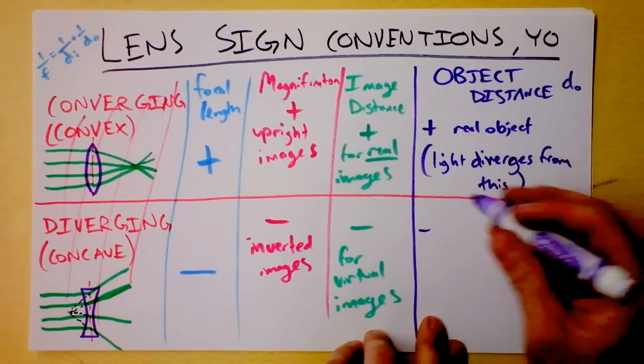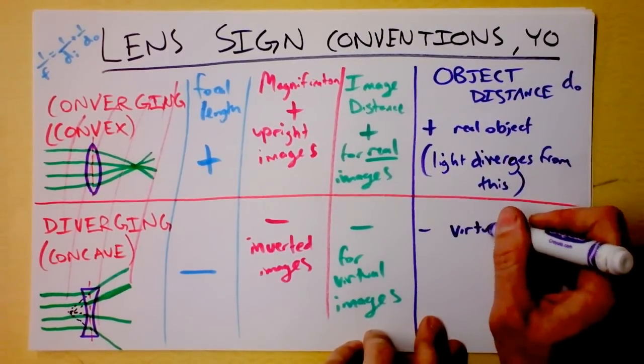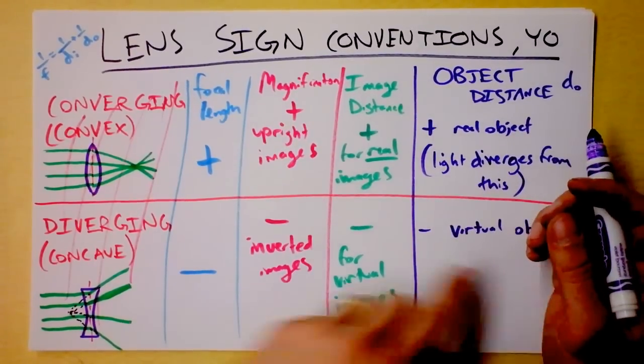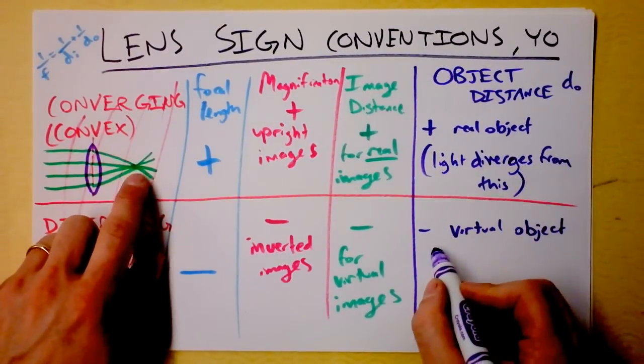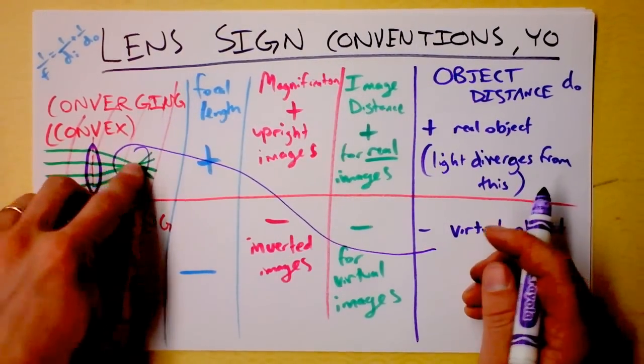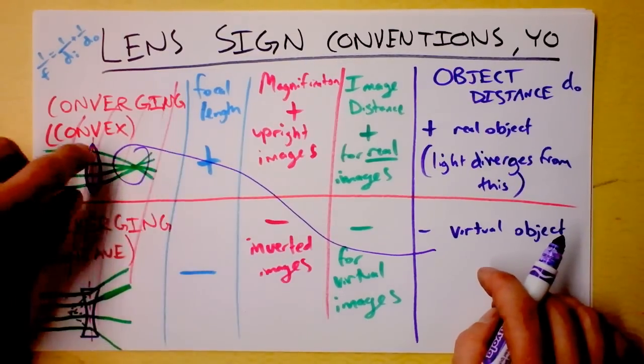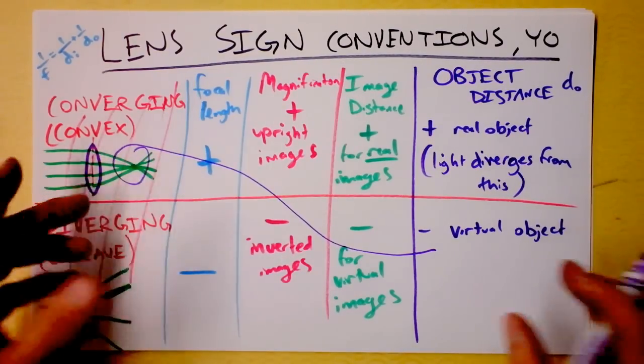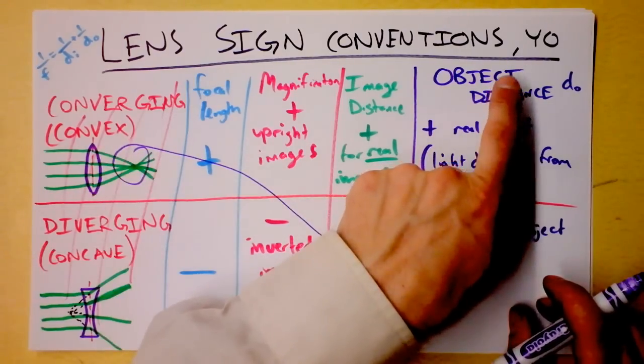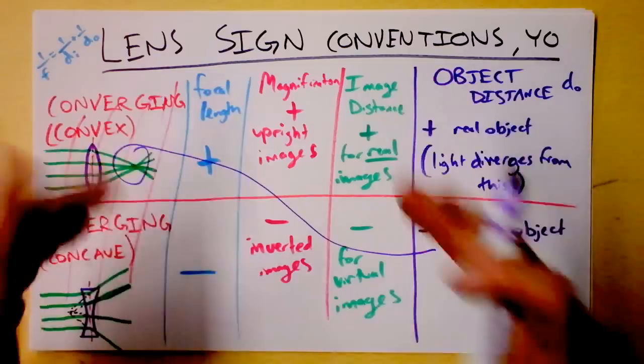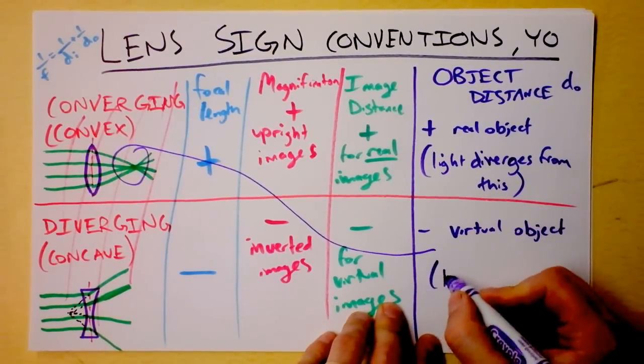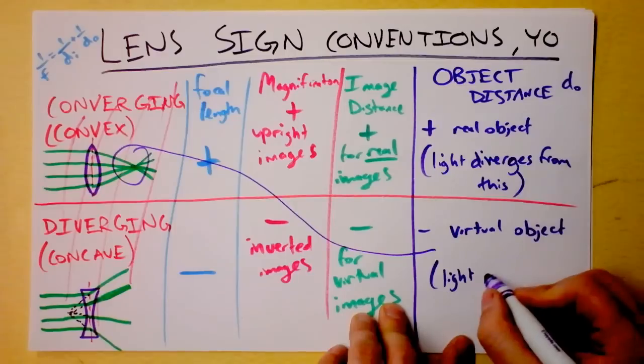And it will be negative for a virtual object. And a virtual object, I guess, would be something like this. Look at this thing over here. This is like a virtual object because light is converging to it, not actually diverging from it, but converging to it. Functionally, it's rather equivalent, but we would say that it's on the opposite side of that optical instrument. So the virtual object is something toward which light converges.